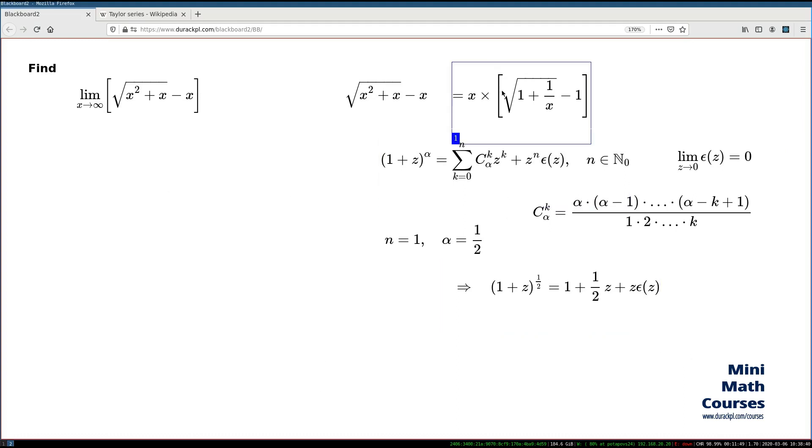Once again let me emphasize that the square root is a power function with the exponent 1/2 and in place of z I'm going to take 1/x. So once we've done this prep work we can come back to the limit and see how this helps to find the value for that limit.